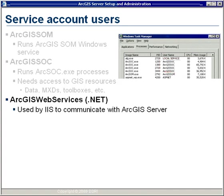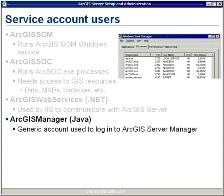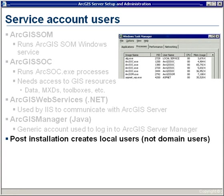In addition to those two accounts, there's another local user created depending on which platform you're using. If you're using the .NET platform, you'll have an ArcGIS Web Services user account, used by IIS to communicate with the GIS server. If you're using the Java platform, you'll have a user called ArcGIS Manager, a generic account used for logging into ArcGIS Server Manager. All of these accounts are created as local machine accounts — there's no need for them to be domain users, even in a distributed installation. During post-installation, you also have the option to change these usernames, though I usually accept the defaults.